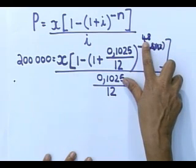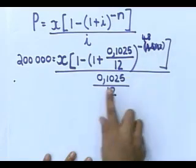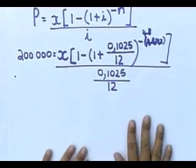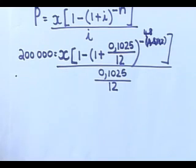But now they said 48 equal monthly payments. Fantastic. So if it's 48 equal monthly payments, leave this as 48. And your interest rate here, 0.1025 over 12. You are looking for X again.